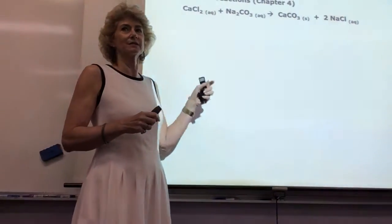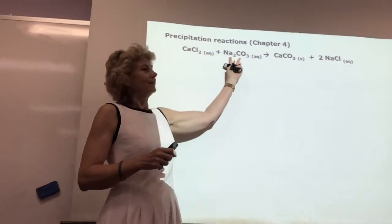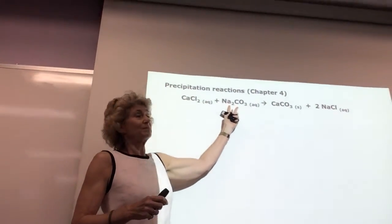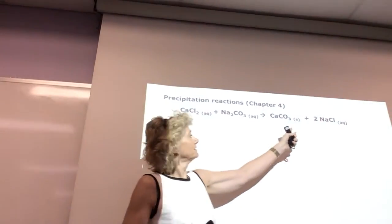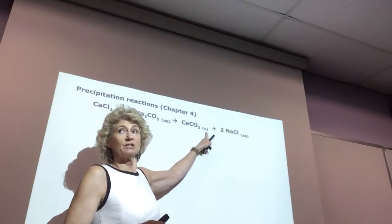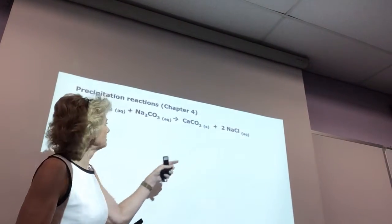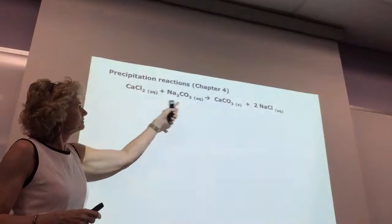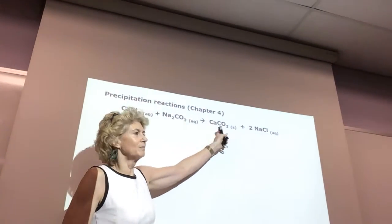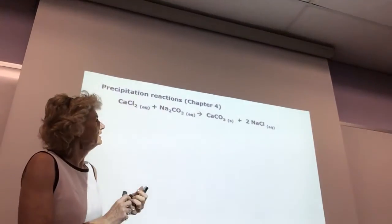What kind of reaction is this? Double replacement — also called a precipitation reaction because a solid forms. So this is limestone, calcium carbonate. It's white, like a white powder.